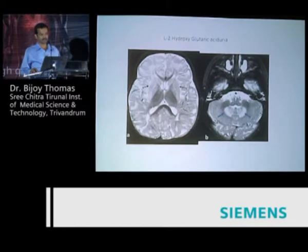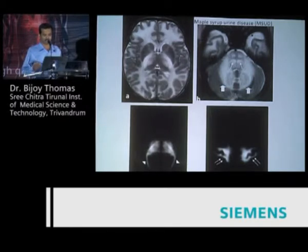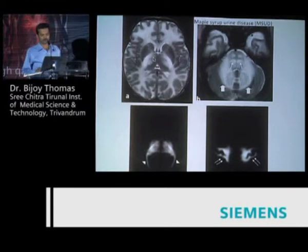Looking at simple images which are optimized for T2 can actually give you a lot of diagnostic information. Maple syrup urine disease—I thought it doesn't exist in India, but it does exist in India. I've talked to Ashish Atri and he has shown me cases. It is actually endemic in some areas in Canada, especially in Waterloo.